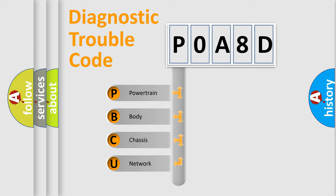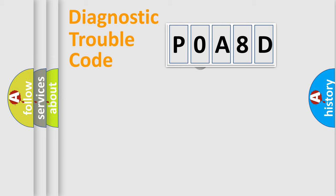We divide the electrical system of an automobile into four basic units: Powertrain, Body, Chassis, and Network. This distribution is defined in the first character code.